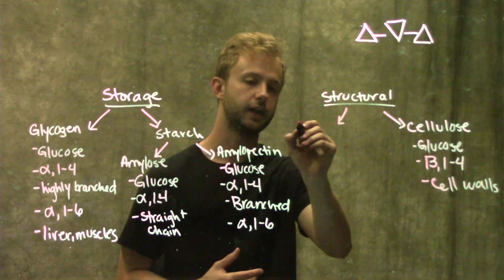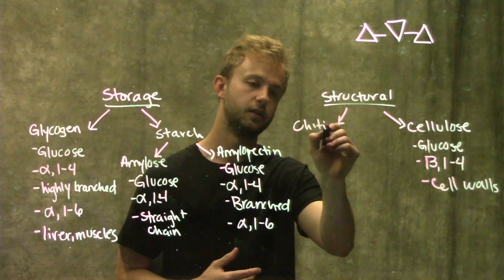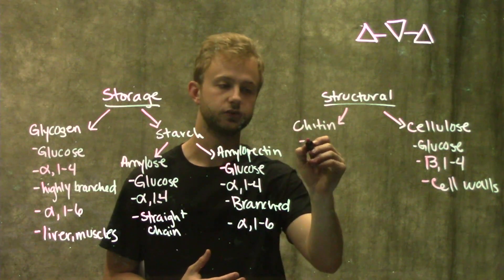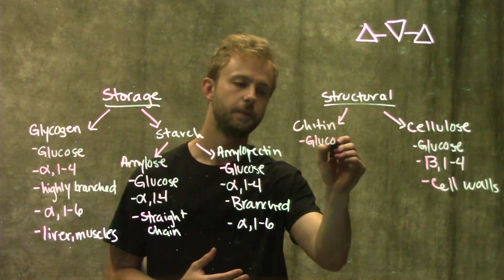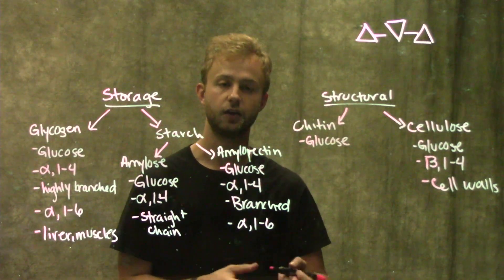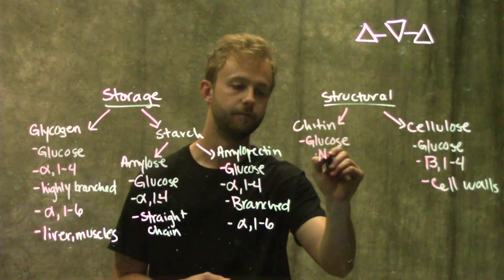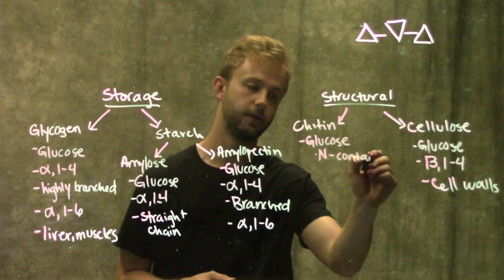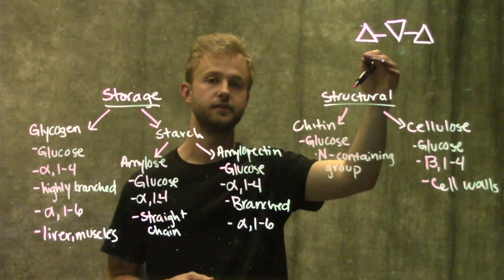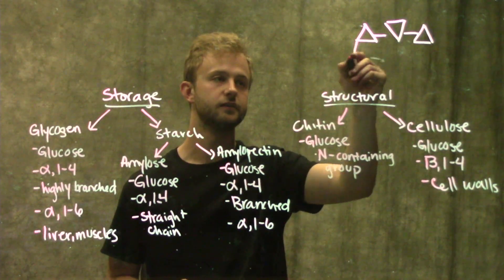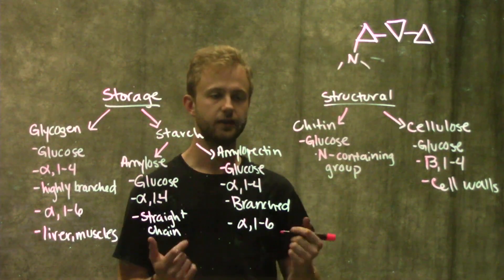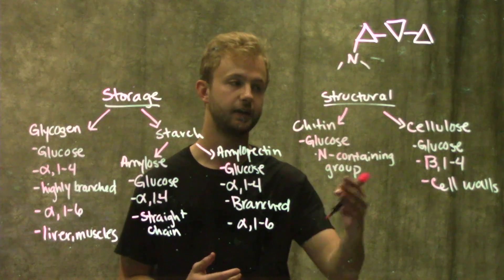Finally, we're going to look at chitin. Chitin is very similar to cellulose, so it's also made of glucose but with one small modification. The glucose molecules in chitin have a nitrogen-containing group on them. For example, if this was chitin, this glucose molecule would have a nitrogen and some other things attached to that. That's one way you can distinguish between chitin and cellulose.